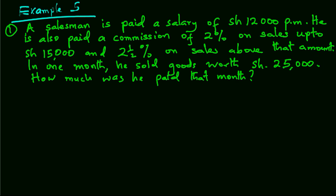In example 5, a salesman is paid a salary of 12,000 shillings per month. He is also paid a commission of 2% on sales up to 15,000 shillings and 2.5% on sales above that amount. In one month, he sold goods worth 25,000 shillings. How much was he paid that month?